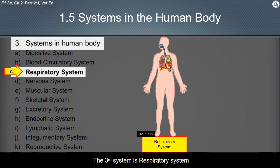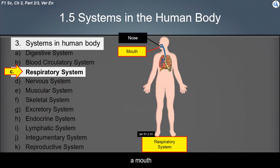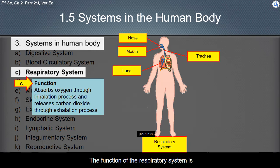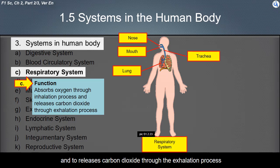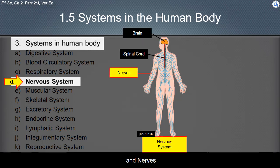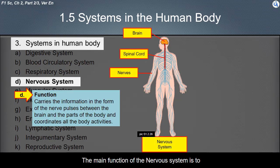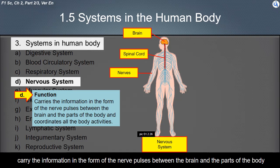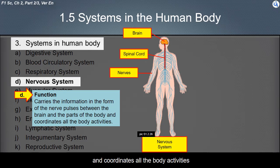The third system is the respiratory system. It consists of a nose, a mouth, a trachea, and lungs. The function of the respiratory system is to absorb oxygen through the inhalation process and to release carbon dioxide through the exhalation process. The fourth system is the nervous system, which consists of the brain, spinal cord, and nerves. Its main function is to carry information in the form of nerve pulses between the brain and the parts of the body, and to coordinate all body activities.